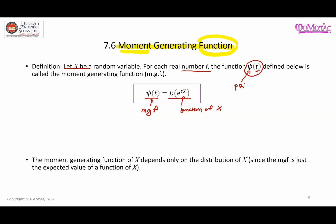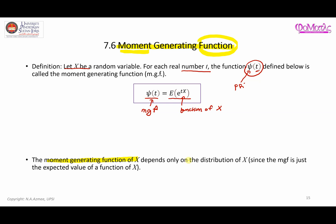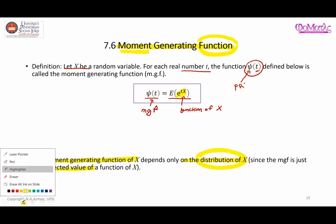As you can see, the moment generating function of x depends only on the distribution of x, since the MGF is just the expected value of e to the tx. In order to find the expected value of this function, you need to know the distribution of x, and therefore the MGF of x depends on the distribution of x.